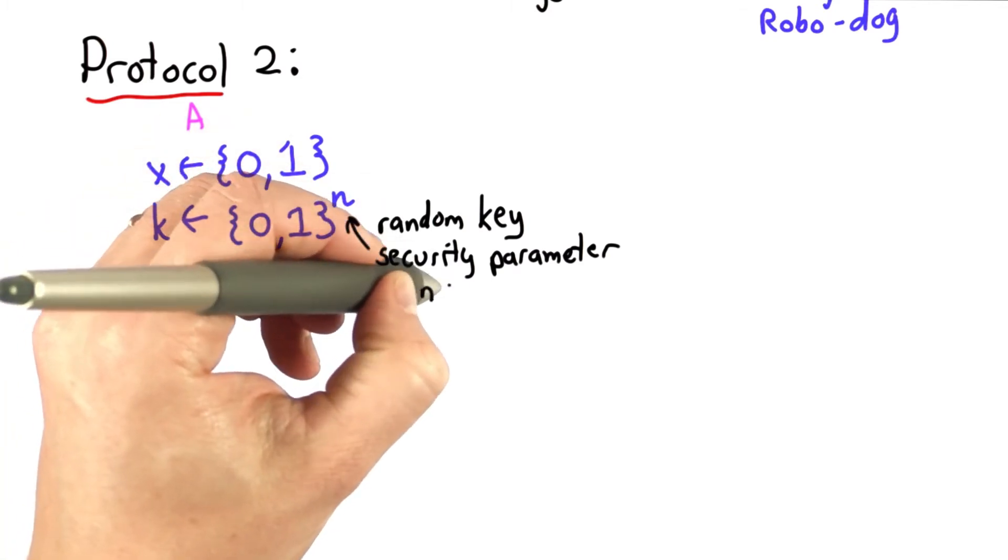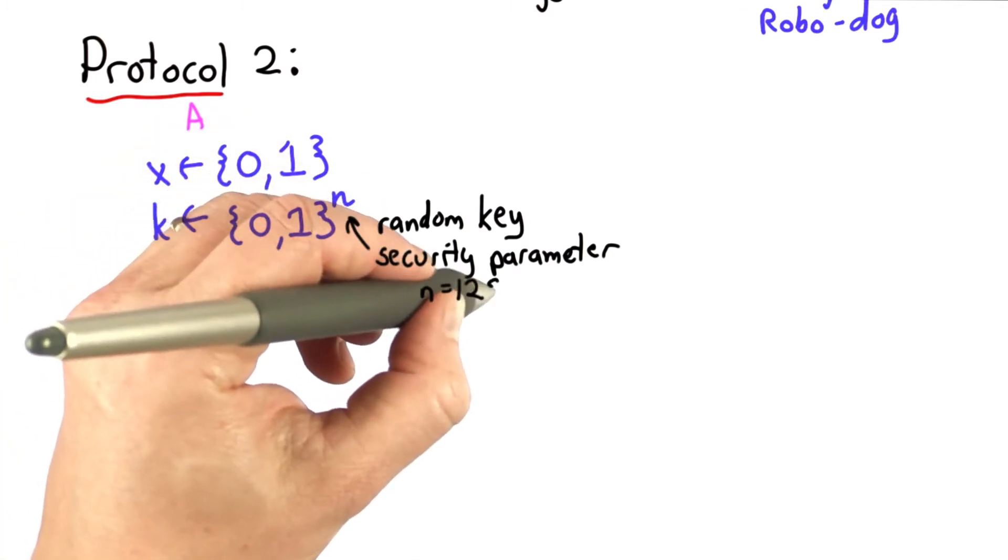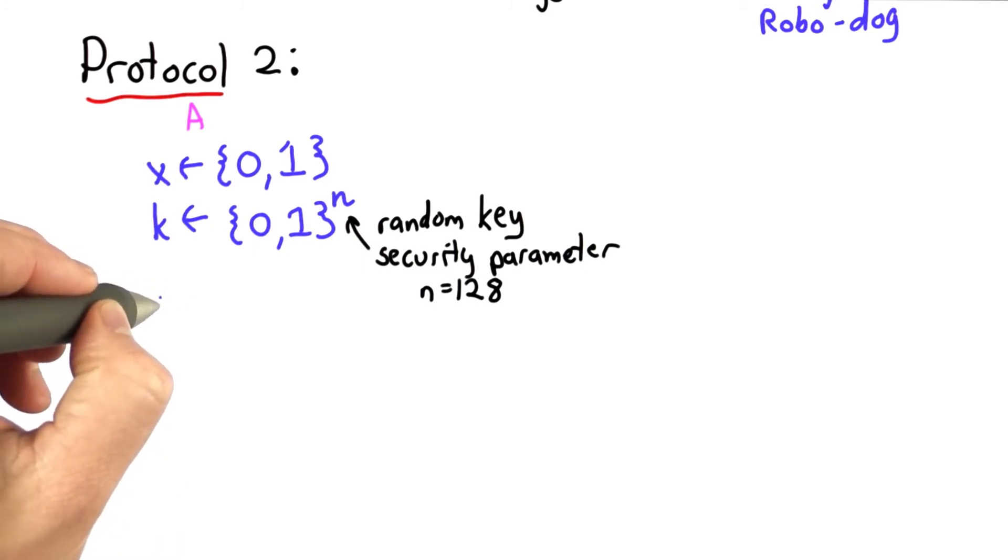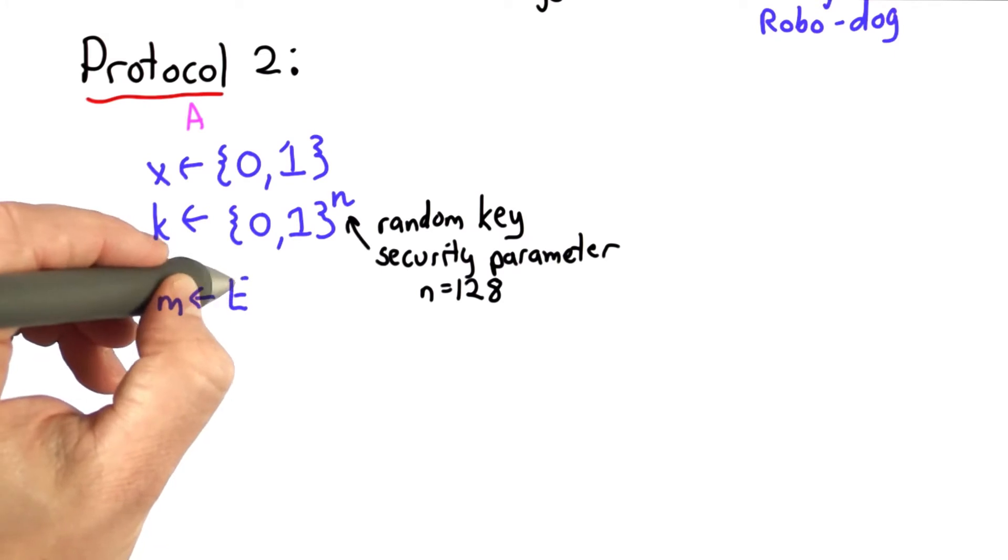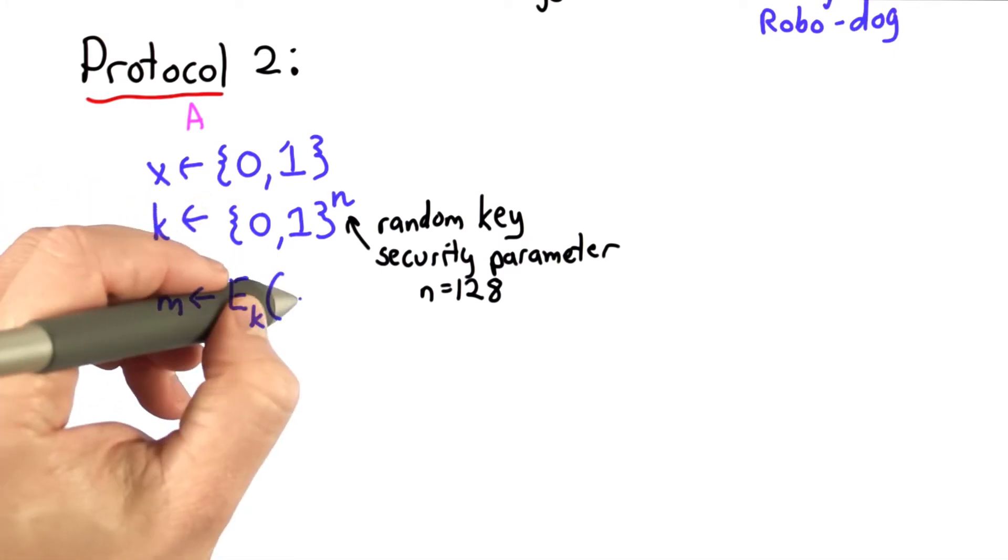Let's assume we're going to use AES and we'll make n equal to 128. Then Alice will compute a message, which is the result of encrypting the value of x using the key.